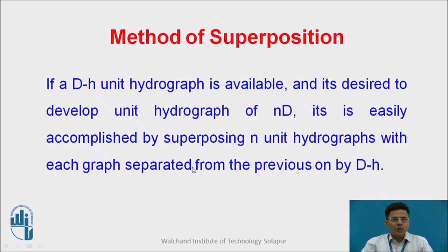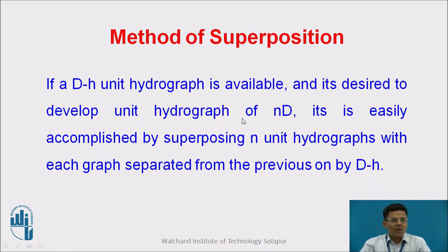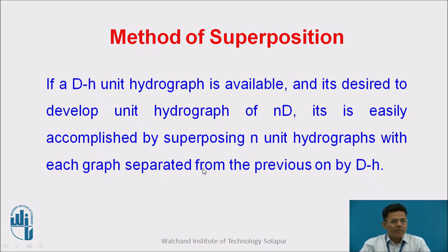What is the method of superposition? If a D-hour unit hydrograph is available — say we have a 2-hour unit hydrograph — and it is desired to develop a unit hydrograph of N times D (where N can be 2, 3, or 4), it is accomplished by superimposing N unit hydrographs, with each graph separated from the previous one by D hours.